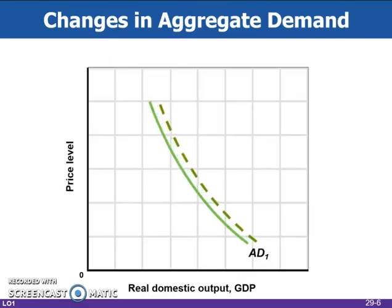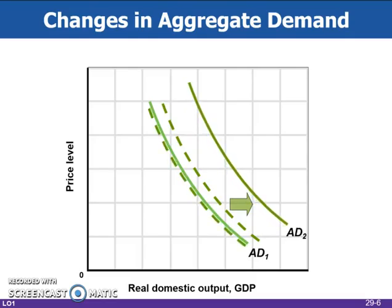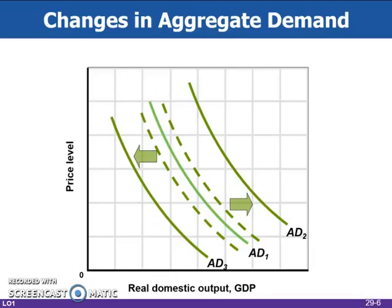This figure shows changes in aggregate demand. A change in one or more of the listed determinants of aggregate demand will shift the aggregate demand curve. The rightward shift from AD1 to AD2 represents an increase in aggregate demand. The leftward shift from AD1 to AD3 shows a decrease in aggregate demand. The vertical distances between AD1 and the dashed lines represent the initial changes in spending, and then through the multiplier effect, that spending produces the full shifts of the curves.